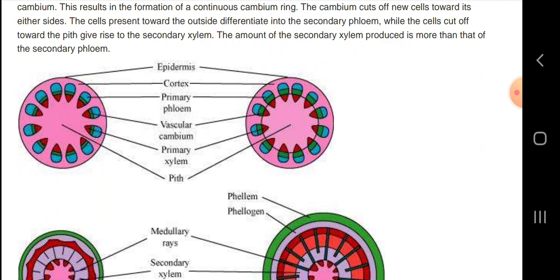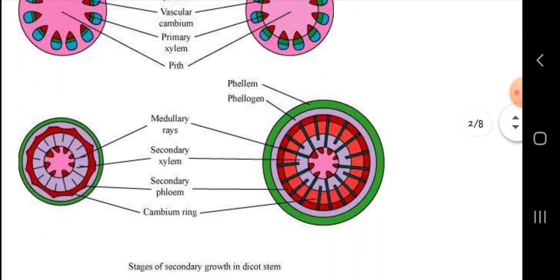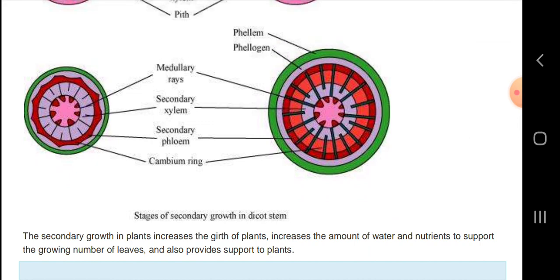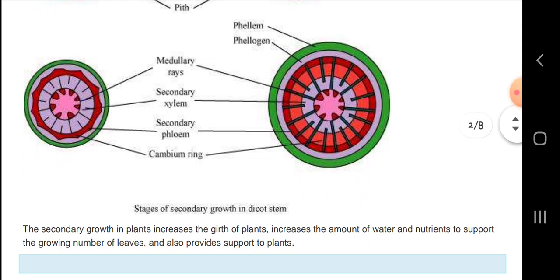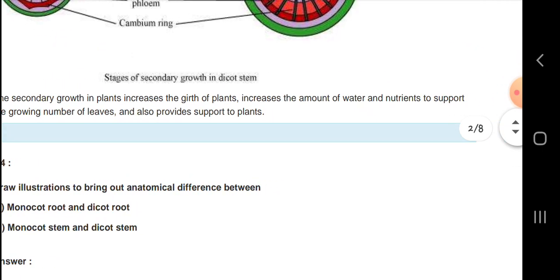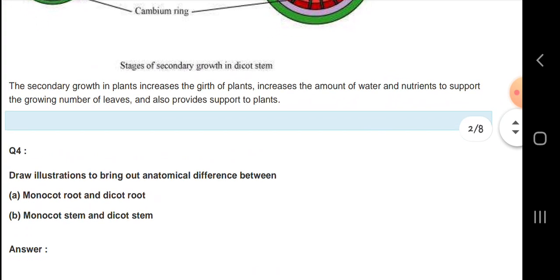Looking at the diagram, you can see the epidermis, cortex, phloem, primary phloem, vascular cambium, secondary xylem, secondary phloem, and the cambium ring.